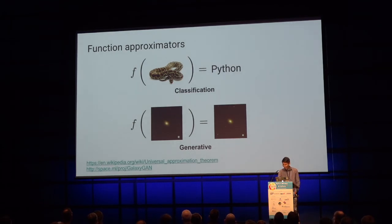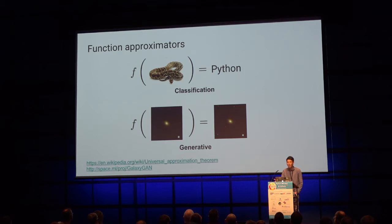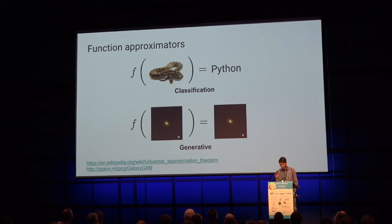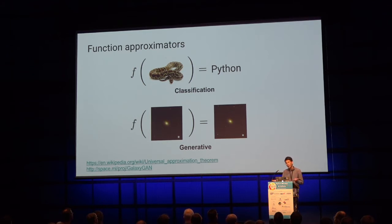What is deep learning? I like to see deep learning and neural networks simply, without any hype, as a function approximator. There is solid theory about multi-layer perceptrons being able to approximate every continuous function with a single hidden layer given a finite number of neurons. You put something A in, and something B comes out — any connection you want. The most hyped one is image classification: put Python image in, get Python label out.